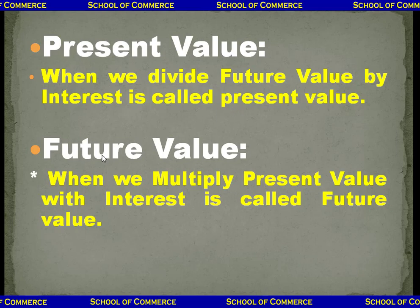Now for future value: in present value we make division, but in future value we make multiplication. When we multiply present value with interest, the result is called future value. So the relation to future value is by multiplication, and the relation to present value is division of future value by interest.